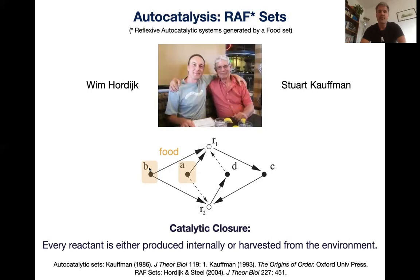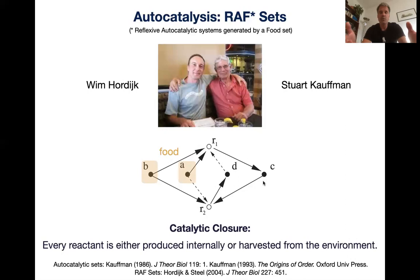The foodstuffs themselves are not produced from within the system, but everything else is. You can also see the difference between catalysis and actual conversion of metabolites. In these networks, very similar to Rosen's closure of efficient causation, every reactant is either produced internally or harvested through food from the environment. Kauffman then went on to wonder how such autocatalytic networks can produce a living organism with autonomy and agency.